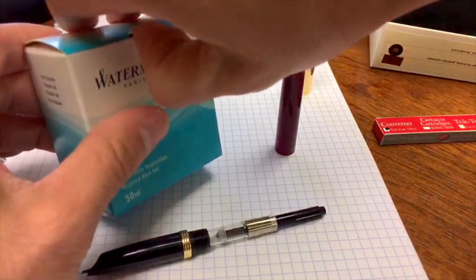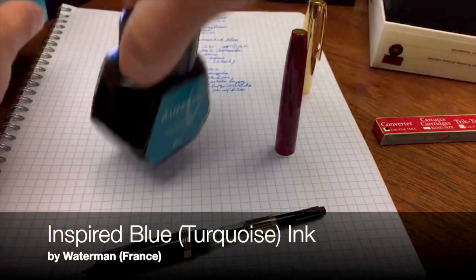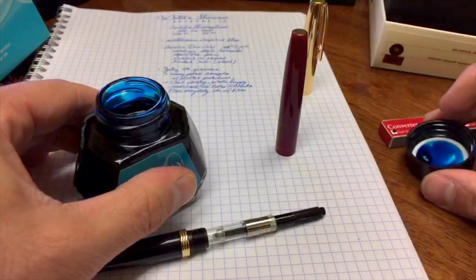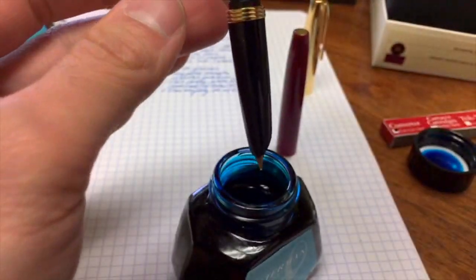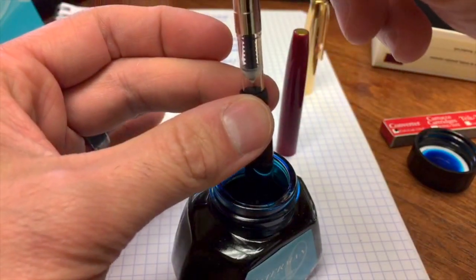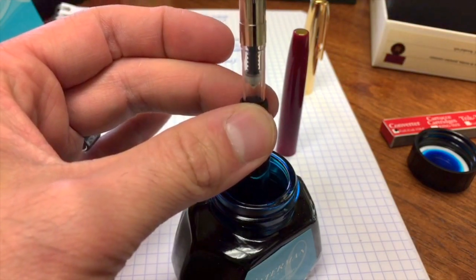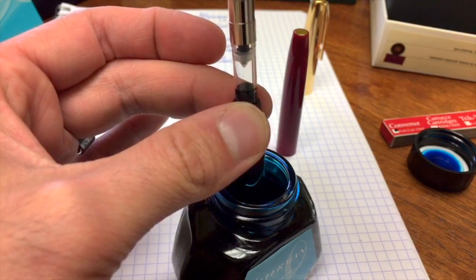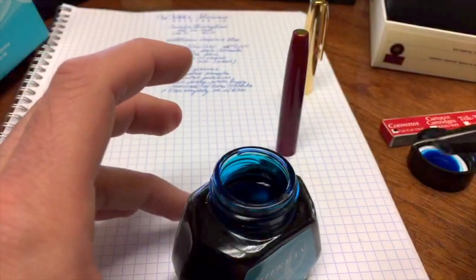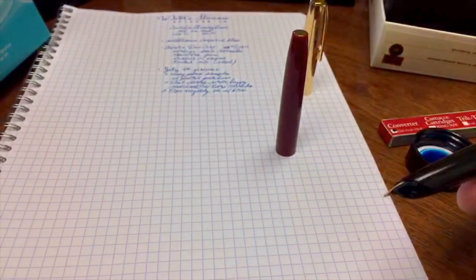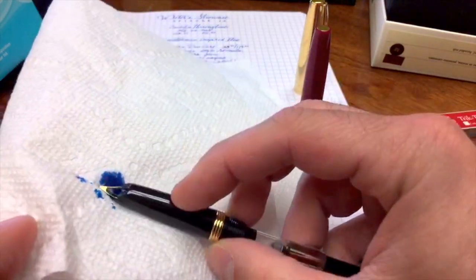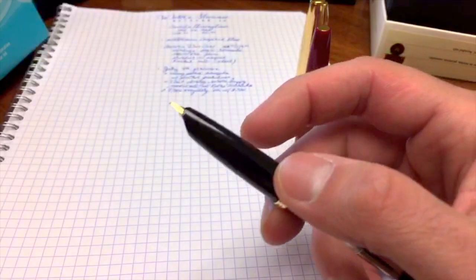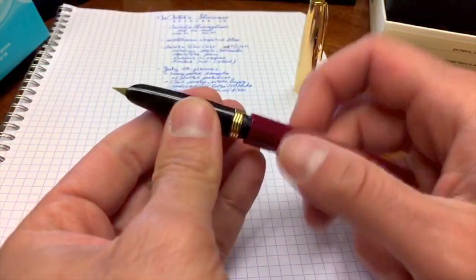We're going to fill it up with some Waterman Inspired Blue, which is a turquoise color. That's a nice turquoise. So we're just going to dip the nib slightly in because we don't want to go full on there because the section is very short. Let's see if we could grab just a bit of ink. I'm getting some bubbles as I'm pushing out the air. And we draw it up just nice and fine. I don't want too much ink in there because I'm not planning on flushing it out afterwards. Just wipe the section. Make sure there's no traces of ink around where I would be possibly gripping the pen.